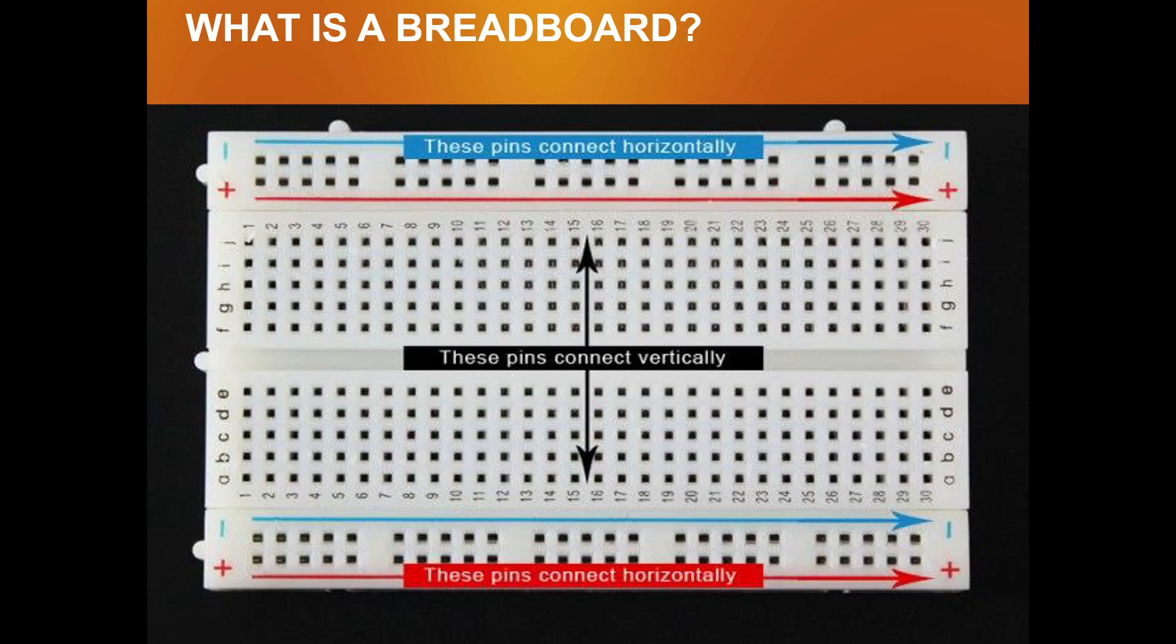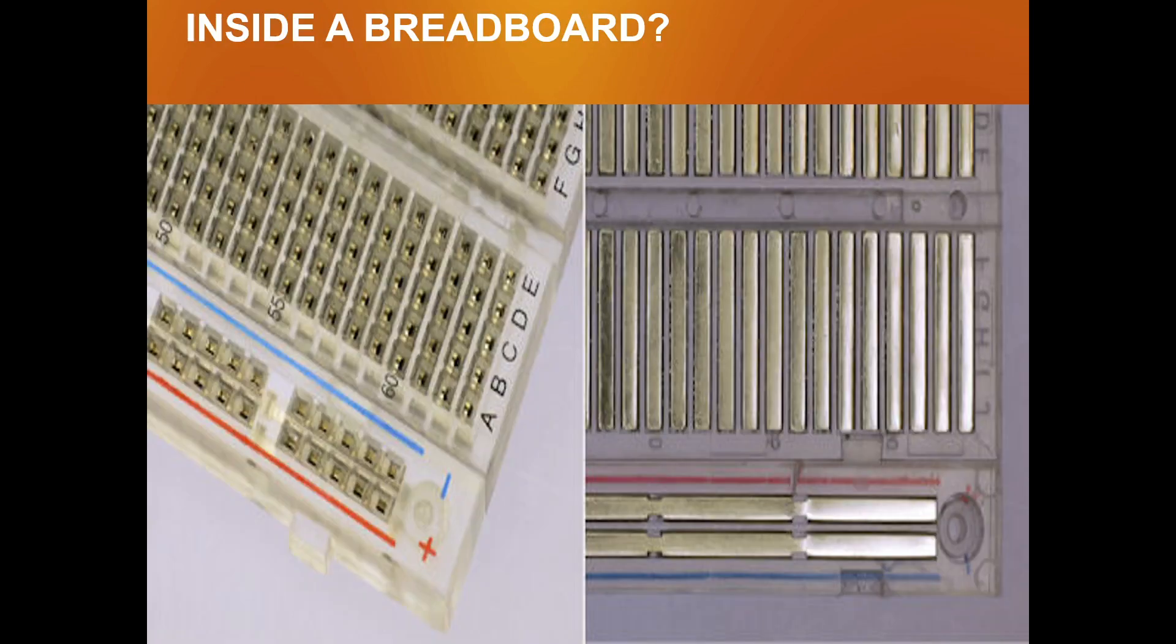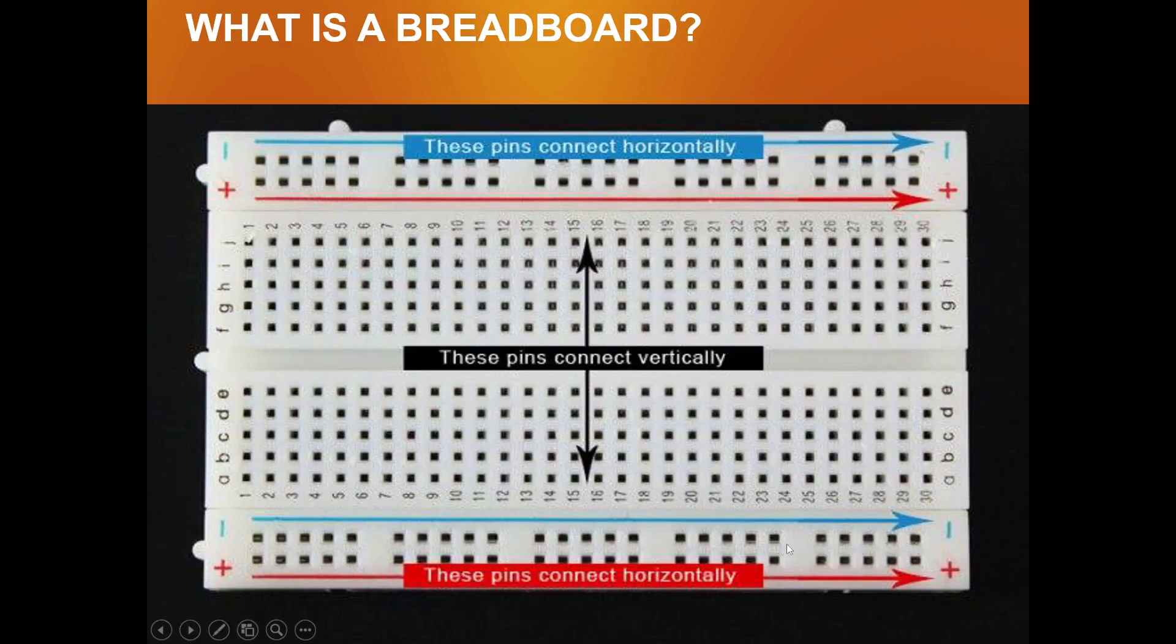As of now just remember this is called a breadboard. When you open it you can see something like that. These are the strips. As I said, this complete line is one. You put it here or here or here, it will be just one circuit. It is divided, in some cases it is divided into half from here.